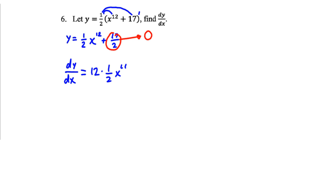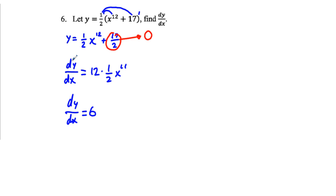So dy/dx equals 6x to the 11th power. That's the answer using the distribution and power rule method.